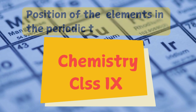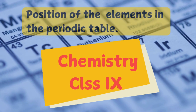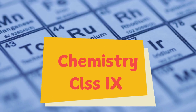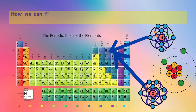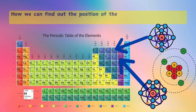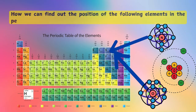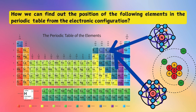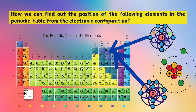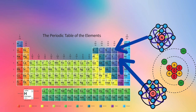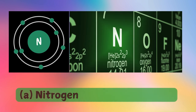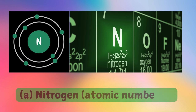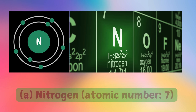Position of the Elements in the Periodic Table. How we can find out the position of the following elements in the periodic table from the electronic configuration? First element: Nitrogen, atomic number 7.